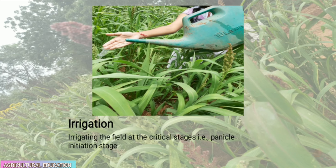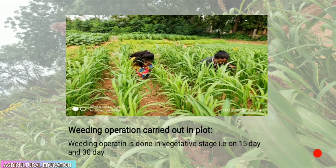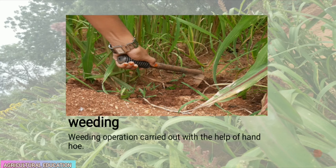Irrigate the plot at the critical stage of panicle initiation. The field should be kept weed-free up to 25 to 30 days after sowing; two weedings are sufficient to control weeds in barnyard millet. The weeding operation is carried out in the vegetative stage — on the 15th day and on the 30th day — using a hand hoe.